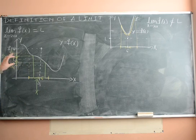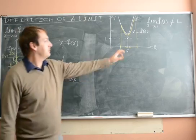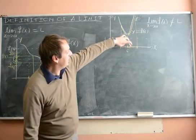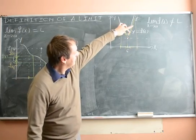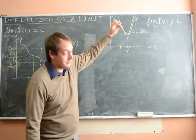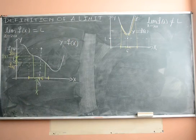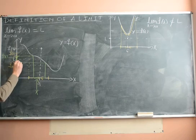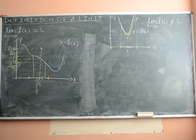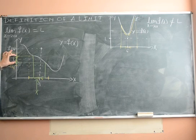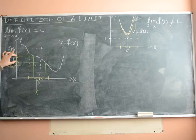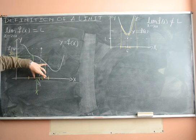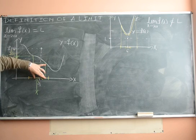So what's the difference between what we're saying here and what we said before? Here we have that the closer x gets to a, the closer f(x) gets to L. Well, the difference is that here we first specify how far we want f(x) to be from L. And then we say, okay, so if we want f(x) to be this close to L, how far can we take x from a?